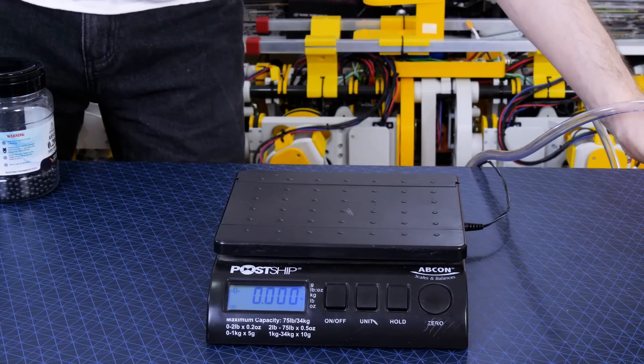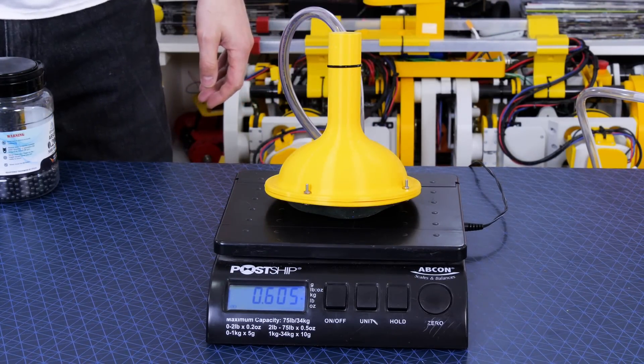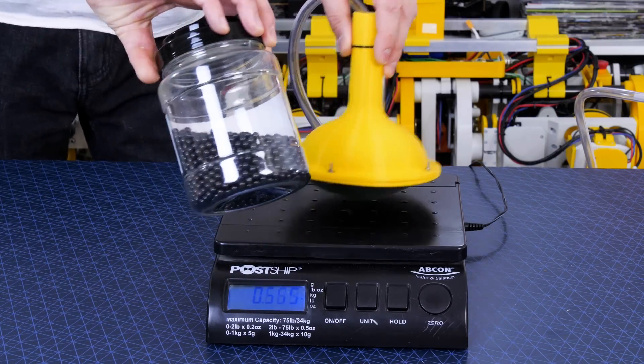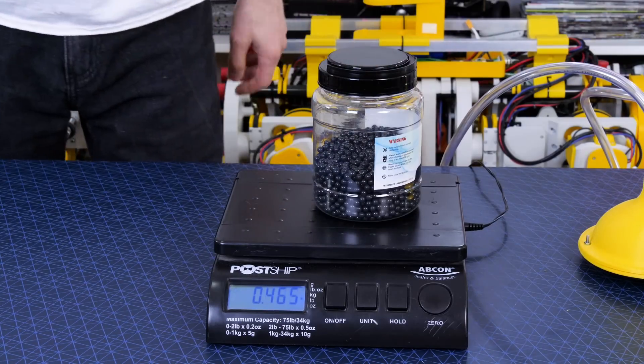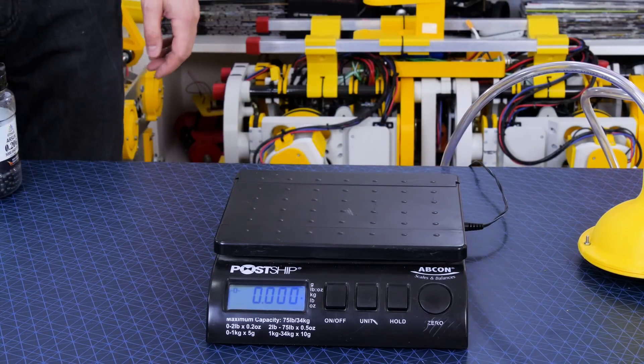I think ideally we need a bigger membrane and more BBs. This already weighs 600 grams and I used around half a pot of BBs. There's around 400 grams left in the pot that I had, so I guess if we were to make it double the size it would weigh almost a kilogram but it would probably stick to objects better.